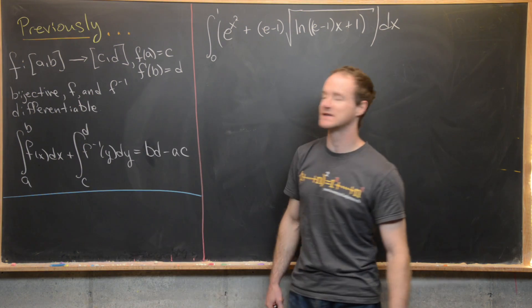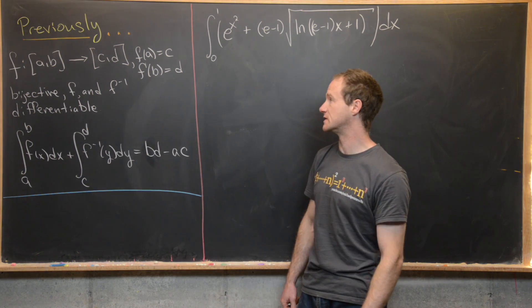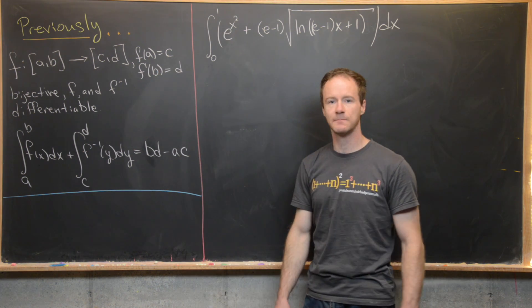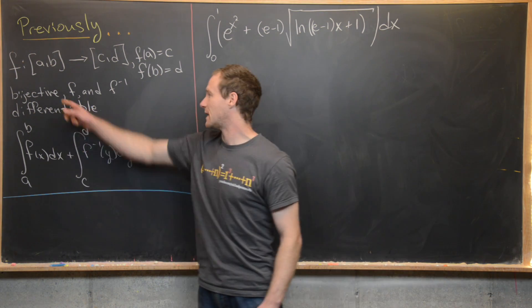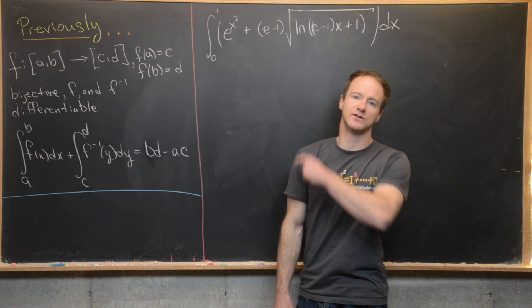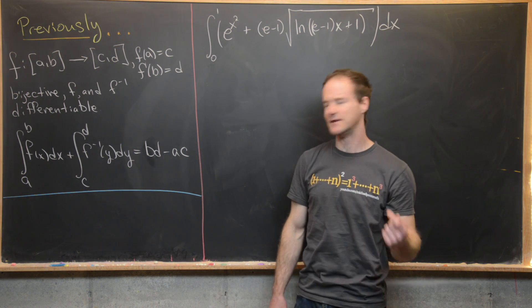We've got a function from [a,b] to [c,d], where those are both closed intervals, and f takes a to c and b to d. Furthermore, f is a bijective function, and f and f inverse are differentiable. Sometimes this is known as a diffeomorphism.